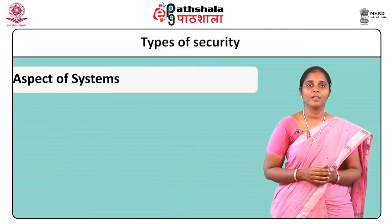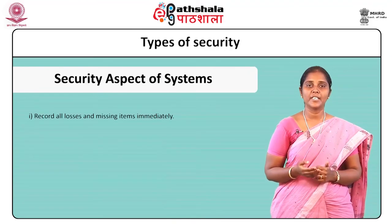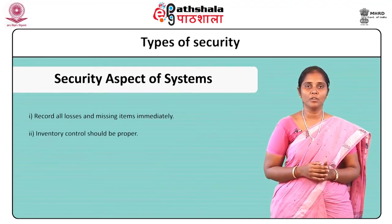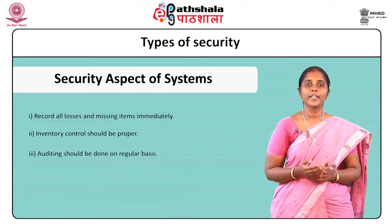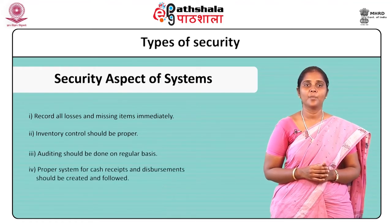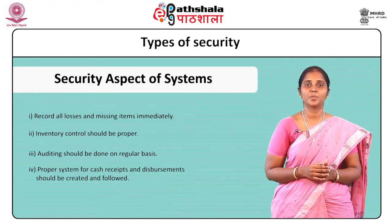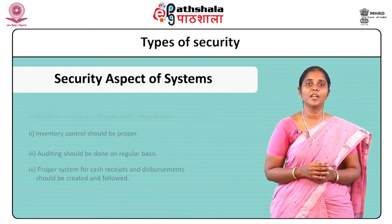Security aspect of systems in hotels is equally important. The objective is to safeguard the assets of the hotel. Systems, procedures, and policies followed properly shall safeguard the assets and increase the lifespan of the equipment. All losses and missing items should be recorded immediately. Inventory control should be proper, auditing done on a regular basis, and a proper system for cash receipts and disbursement should be created and followed.